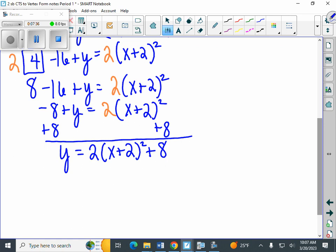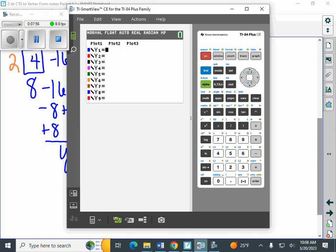But I also want to point out something with regards to your calculator, and that is we can check our answer and know that we have done the problem correctly with our calculator. So if we pull up the calculator and we start by going to y equals here and we're going to type in the original equation. The original equation was 2x squared.